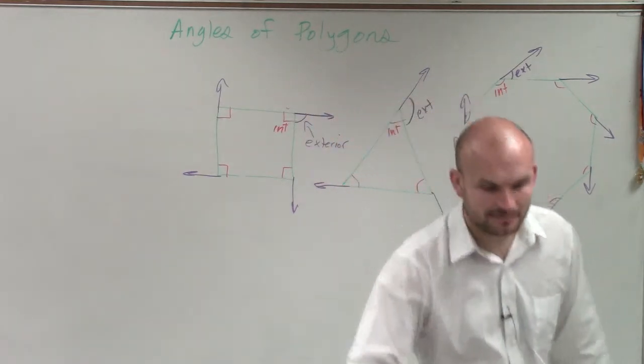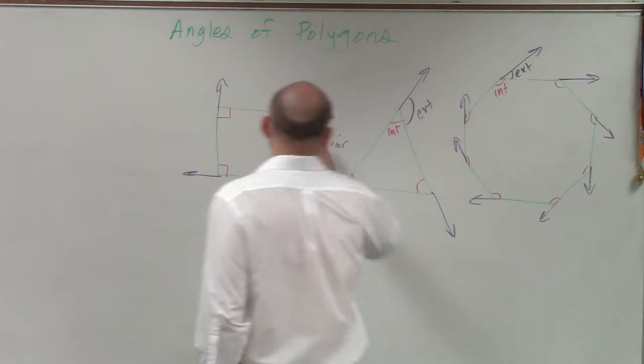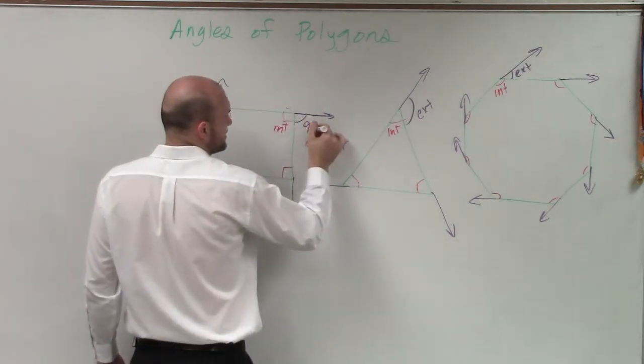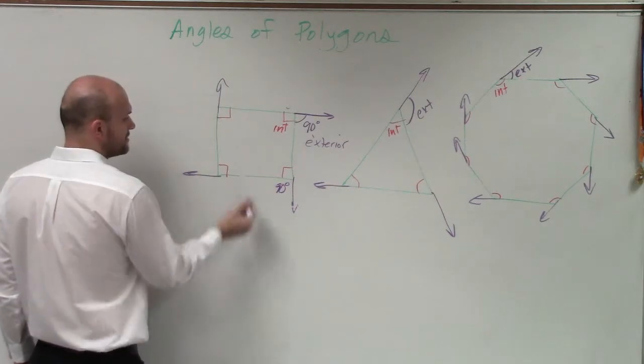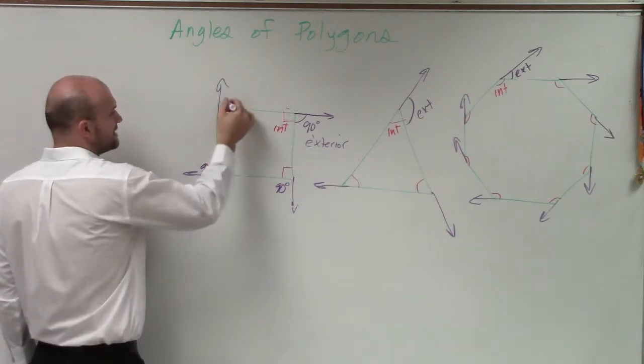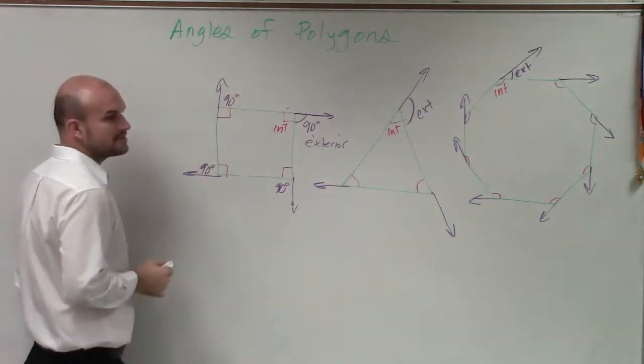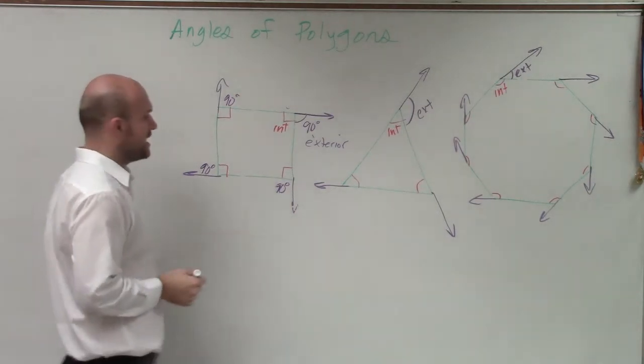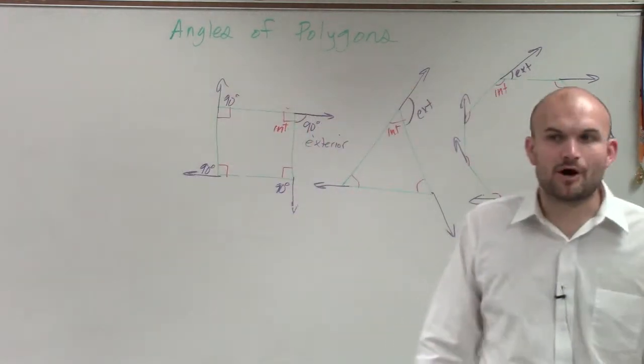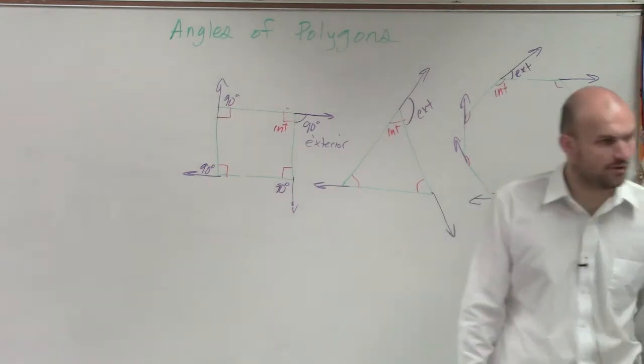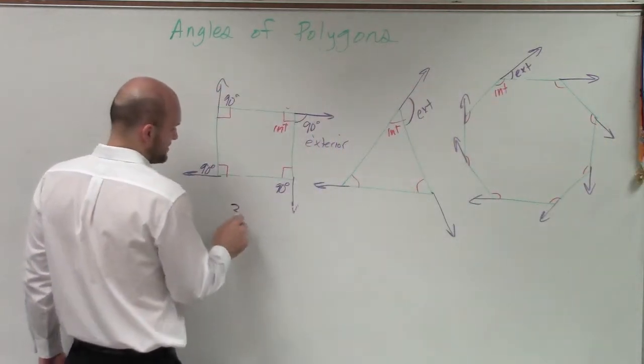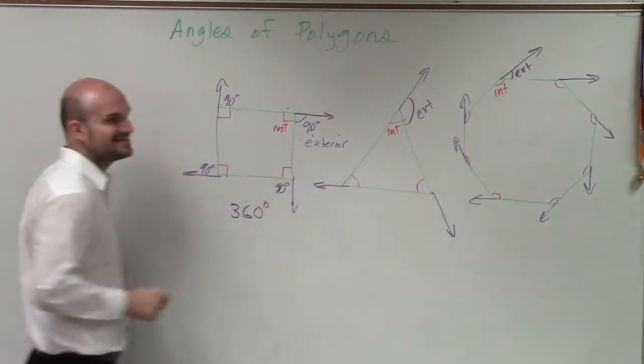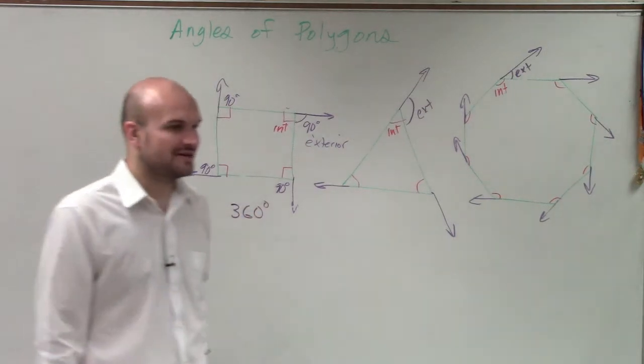we can say now this is going to be 90 degrees. And this one, 90 degrees. This one, 90 degrees, 90 degrees, right? So now let's add up all my exterior angles. If I add up all my exterior angles, that's 90 times 4, which is, Taylor, 360 degrees. Very good.